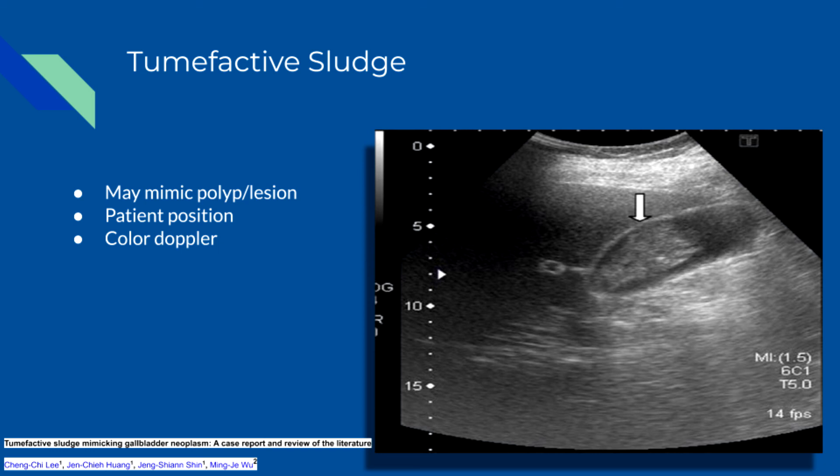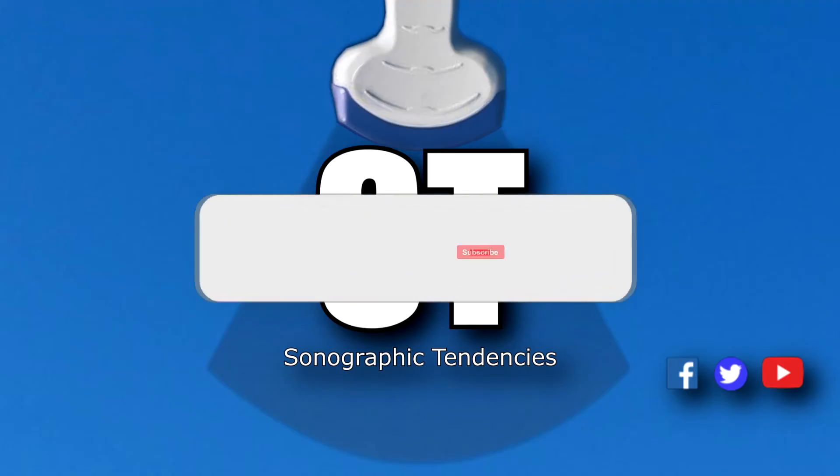The gallbladder may also be completely filled with sludge, making the whole gallbladder complex isoechoic to the liver. This is called hepatization.